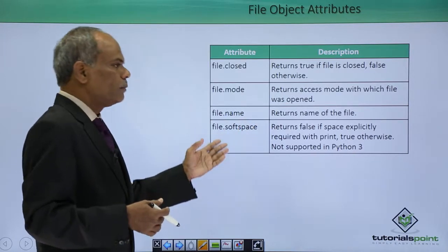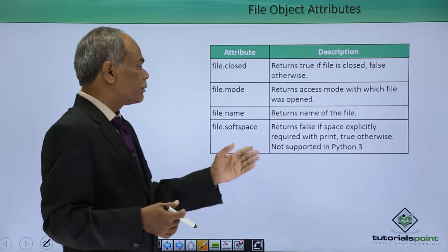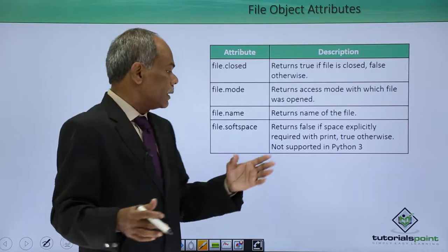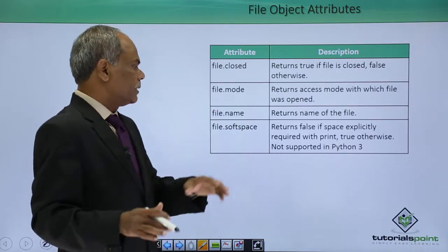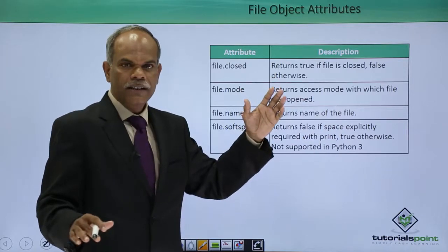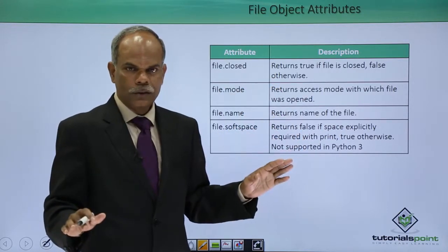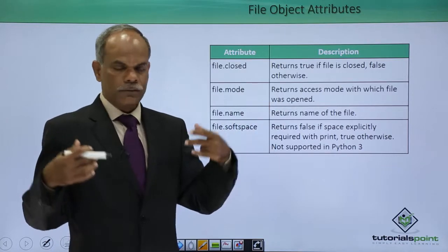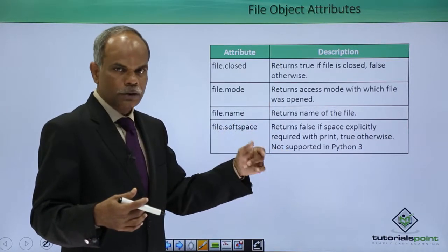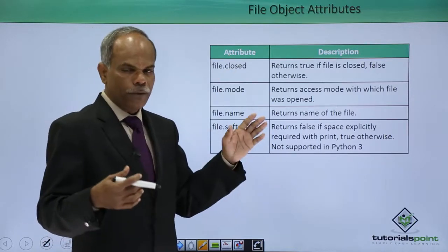The file.softspace attribute returns false if the space is explicitly required with print, and it is true otherwise. However, this attribute is not supported in Python 3. This was present in Python 2, the earlier version; in Python 3 it is deprecated.